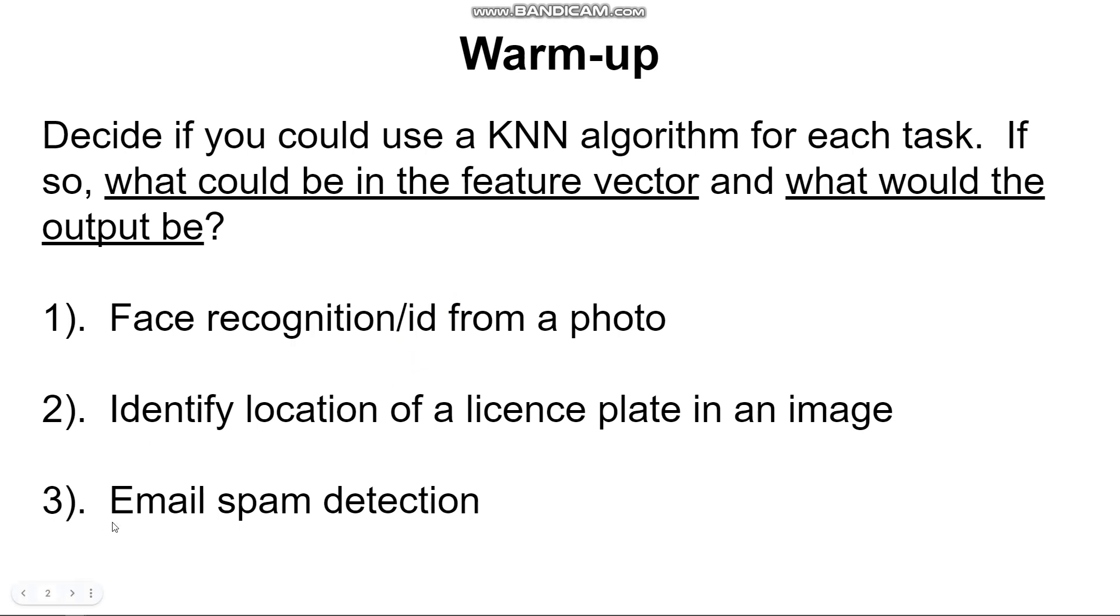Let's jump down to three, email spam detection. This one also could definitely work. The output categories seem pretty straightforward, either yes this is spam or no this is not spam. The input, initially the last third block was saying we'll just give it the whole email. But notice the whole email is not actually a numeric vector. You need to reduce whatever it is you're trying to categorize into a list of numbers.